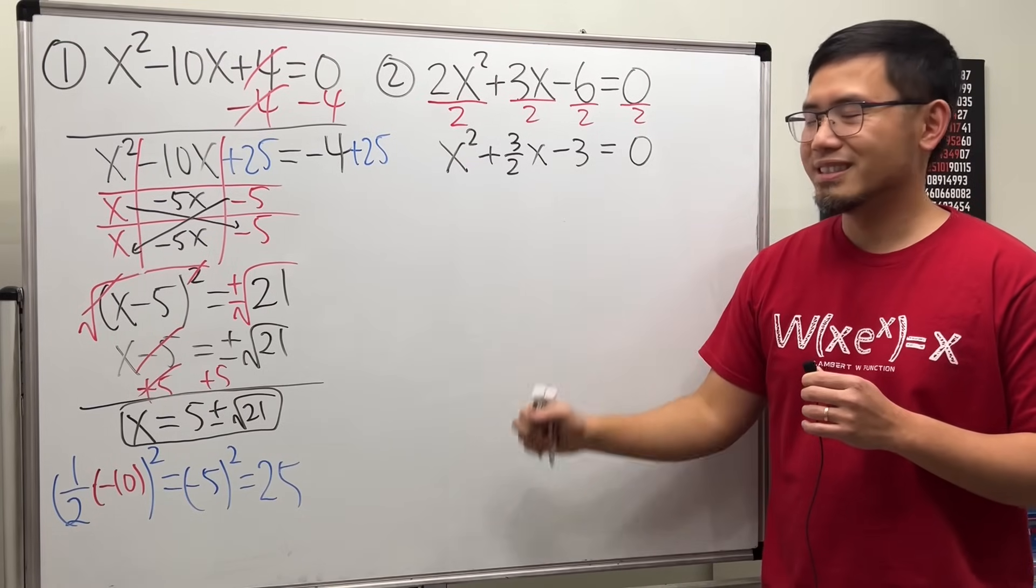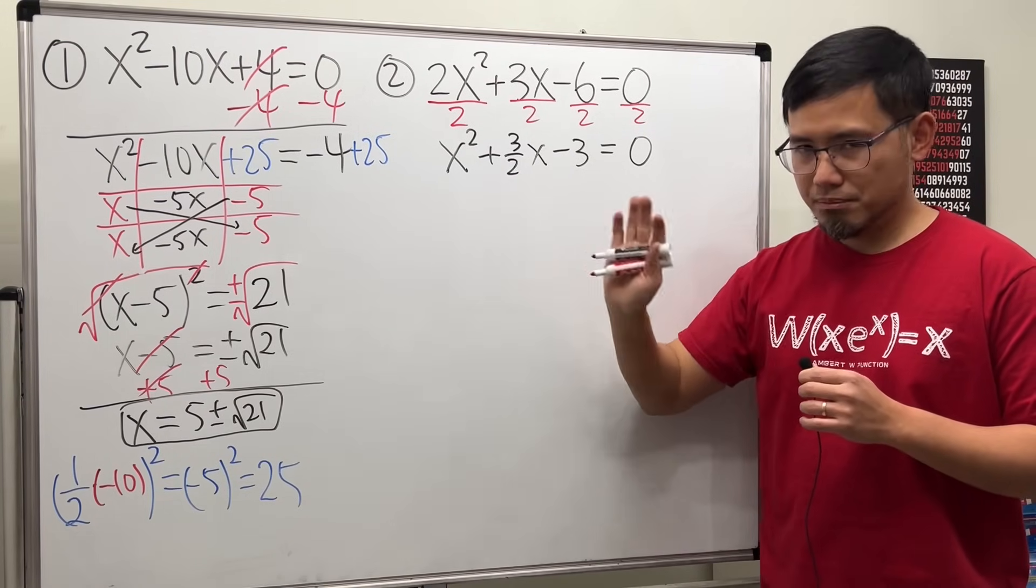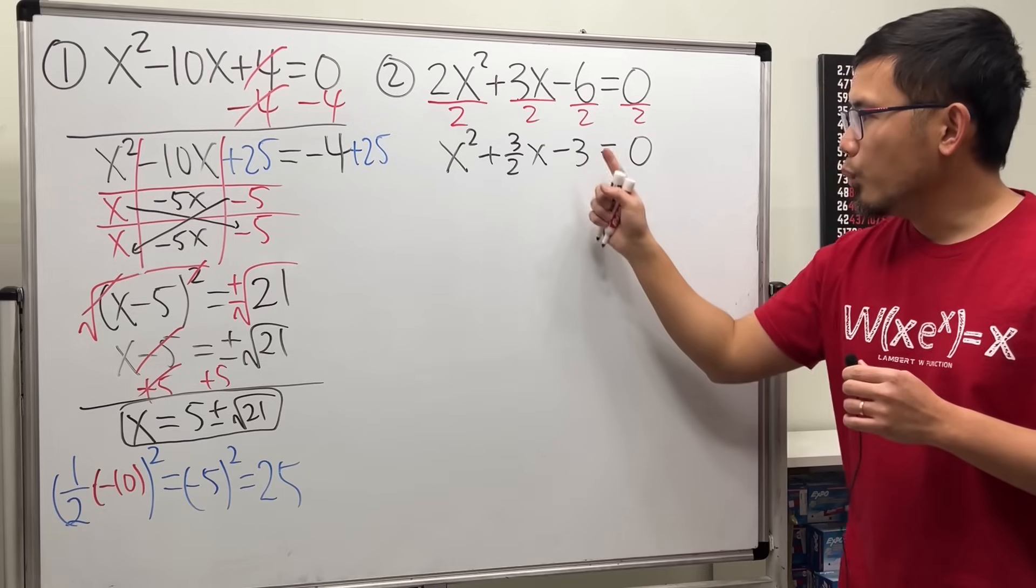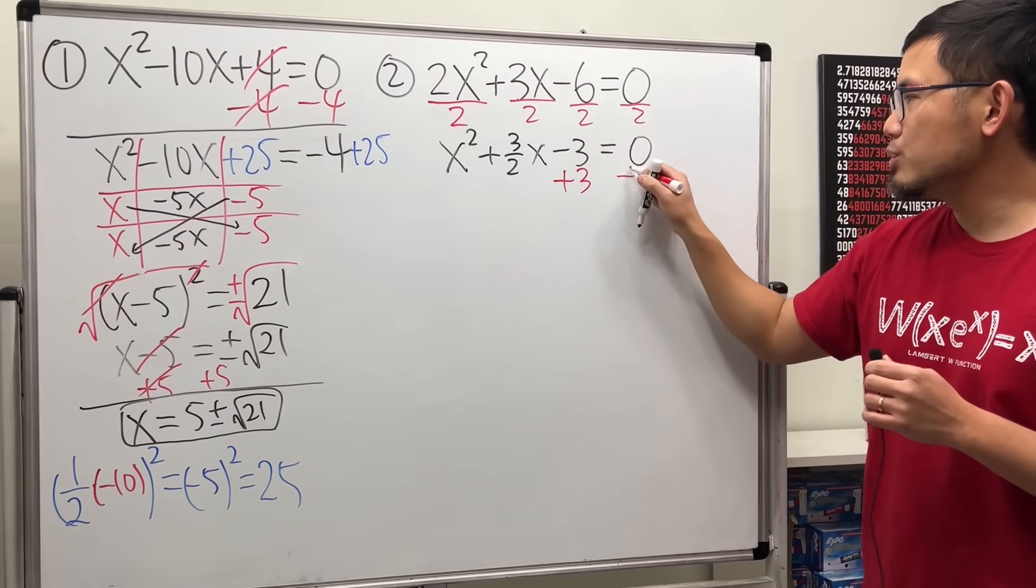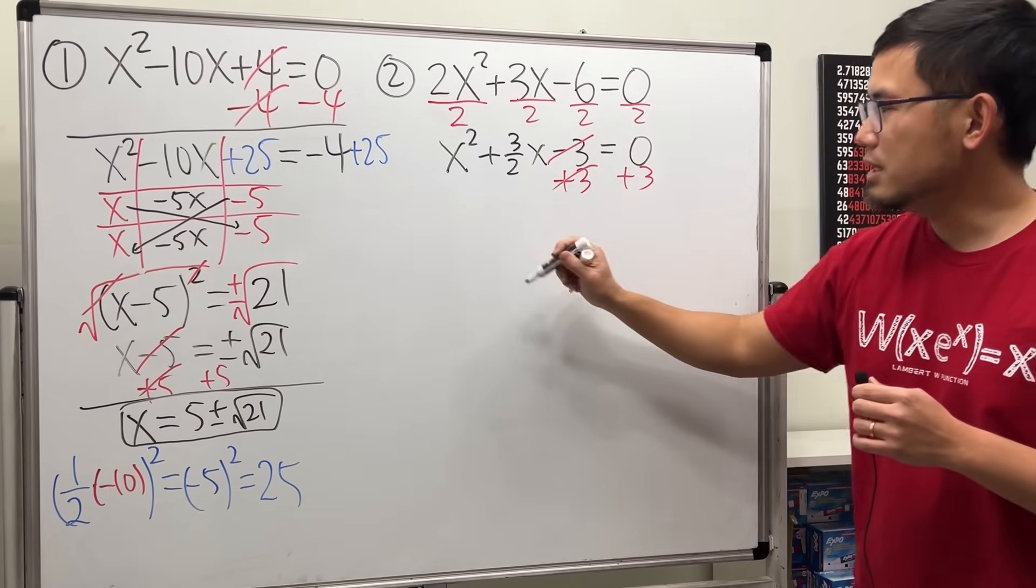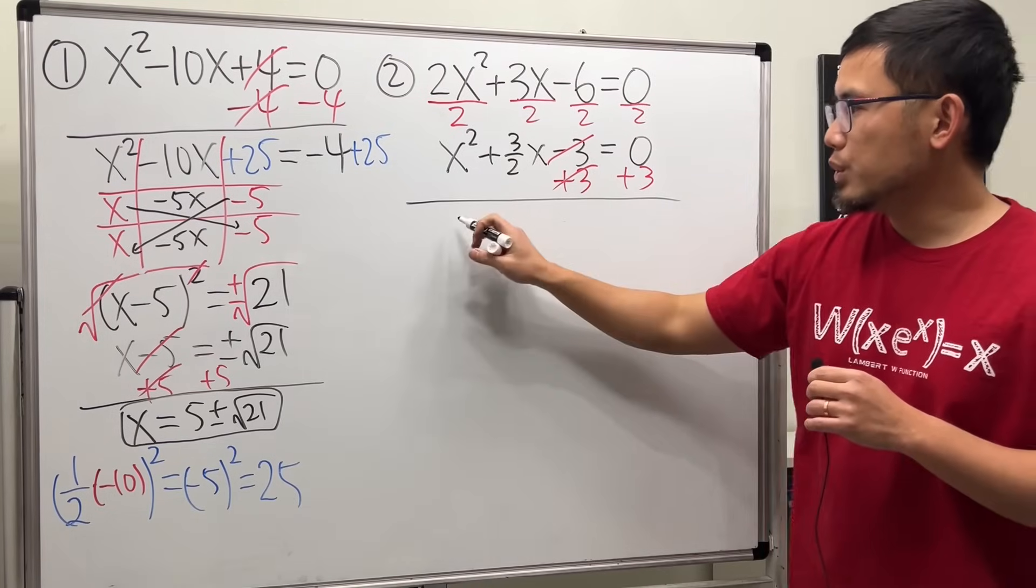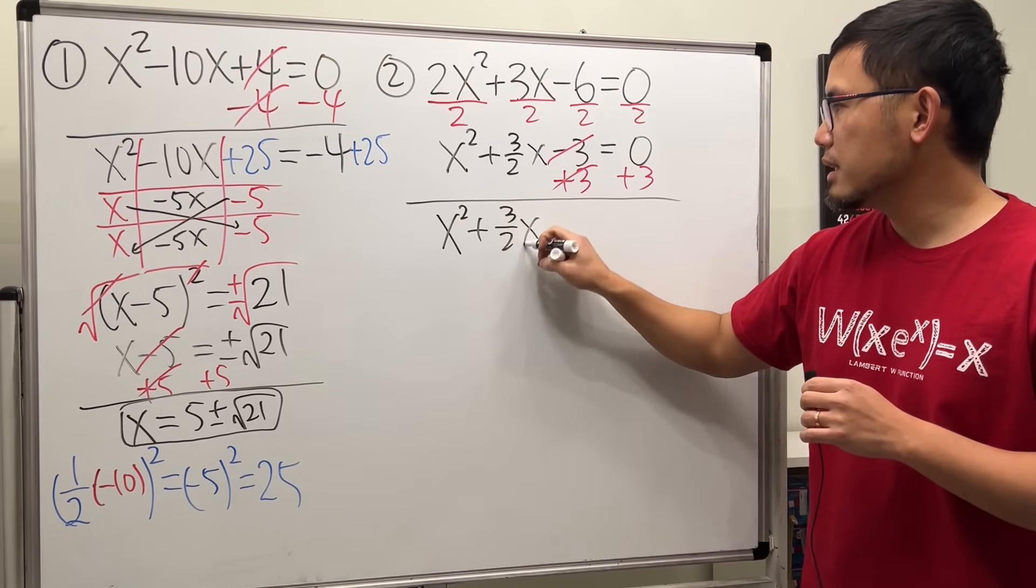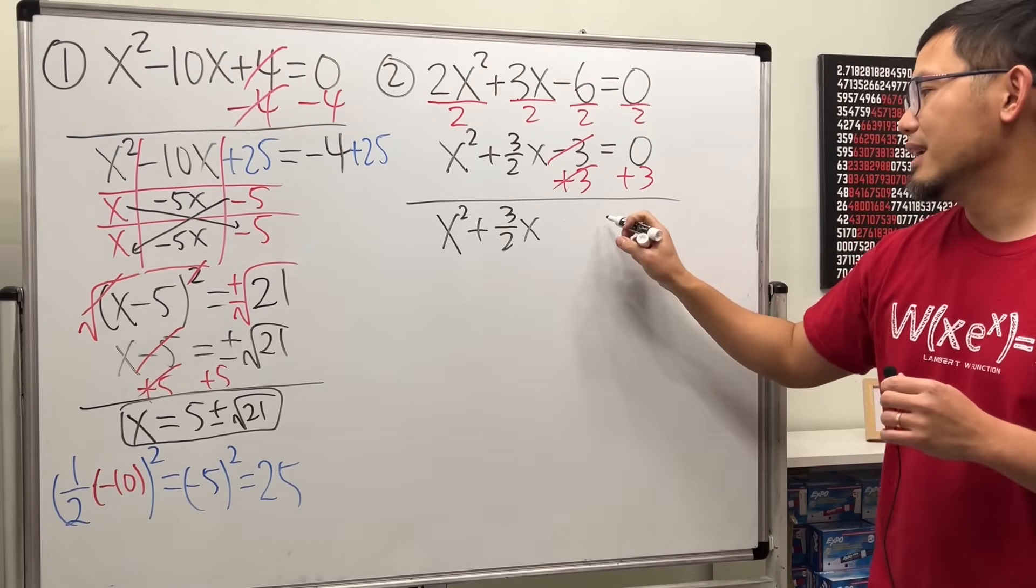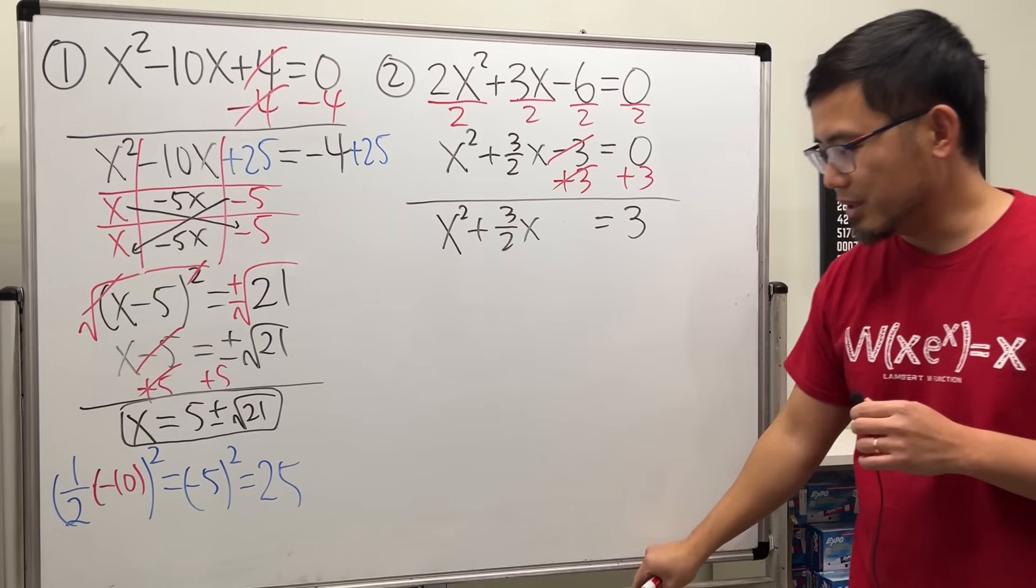Now we have a 1. Great. This time we have a fraction, but we'll just deal with it. We don't want the negative 3. Let's put it to the other side by adding 3 on both sides. Cancel this. So we get x squared plus 3 over 2x. Leave a space. And that's equal to 0 plus 3, which is just a 3.